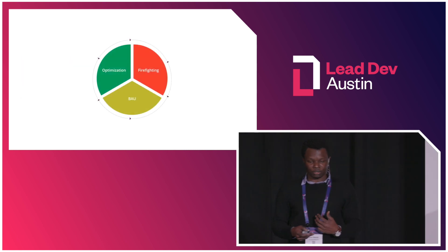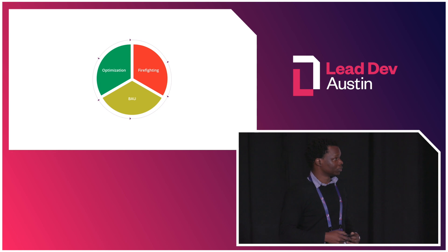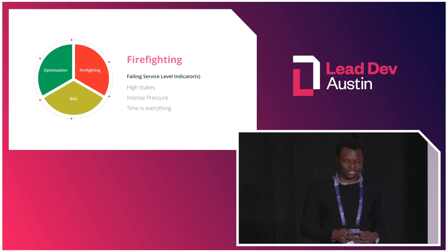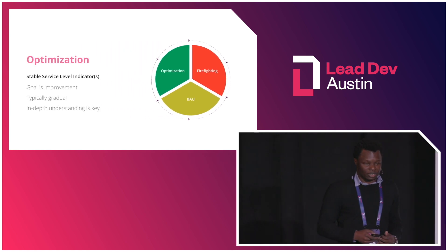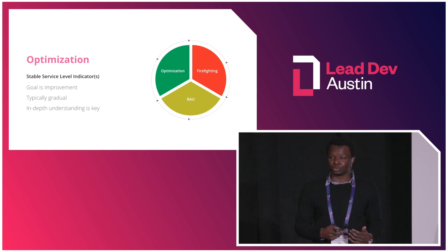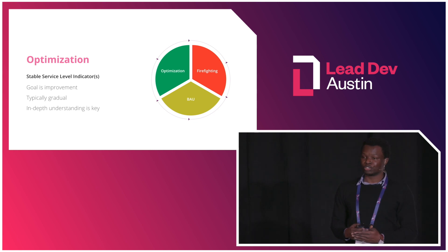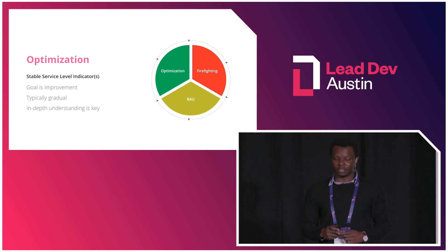A good way to think about this is to look at how we typically build and operate our systems, usually operating under one of two modes: optimisation or firefighting. Firefighting is a high-stakes situation where you have a failing SLI and need to rapidly restore it, often under intense pressure. Optimisation, on the other hand, is when you have stable SLIs and need to improve them, usually gradually. In the firefighting case, observability should help you find the information you need as fast as possible. In the optimisation case, observability should help you build as complete and accurate a picture as possible of the system you're interested in. If you find that you cannot achieve either of these goals, then you don't have an observable system.